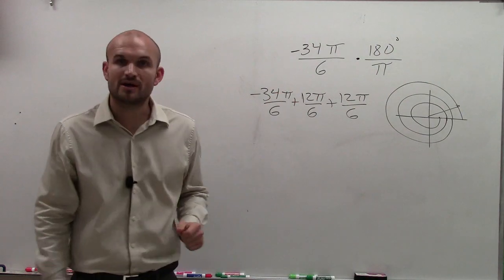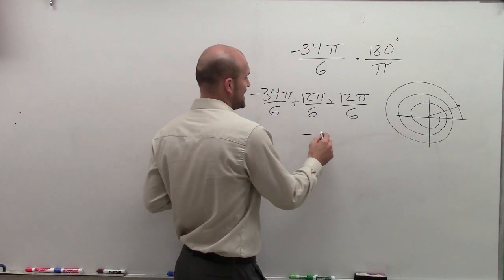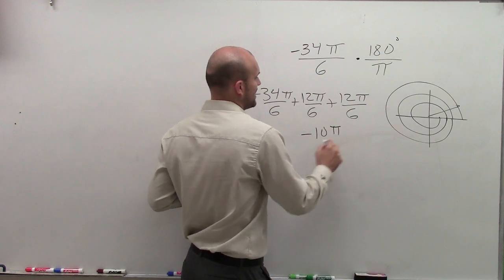So that ends up being 24π over 6, and I reduce it down to negative 10π over 6.